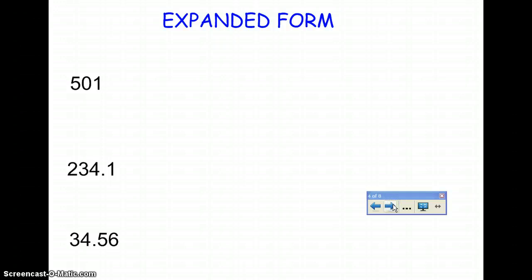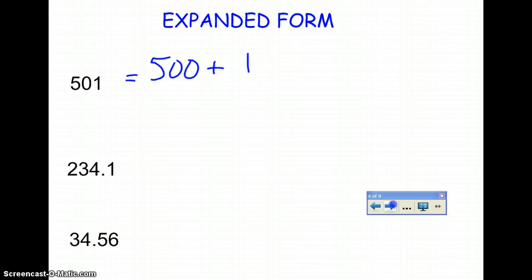This is expanded form. Expanded form is where you take a number written in standard notation and convert it by expanding it to its fullest. For example, 501 in expanded form looks like 500 plus 1. The hundreds column gives you 500, the tens column has a 0 so you don't need it, and the ones column gives you the 1.